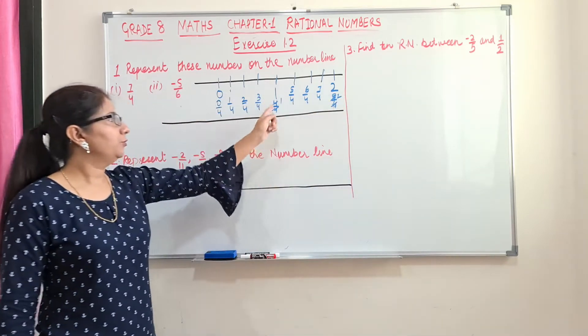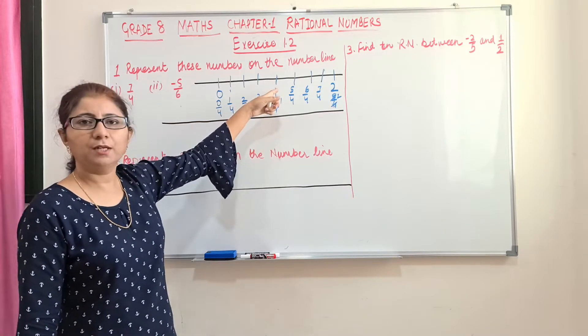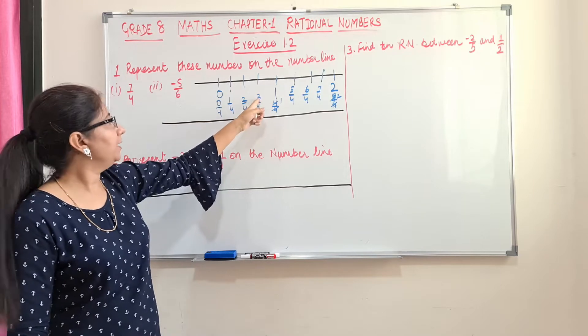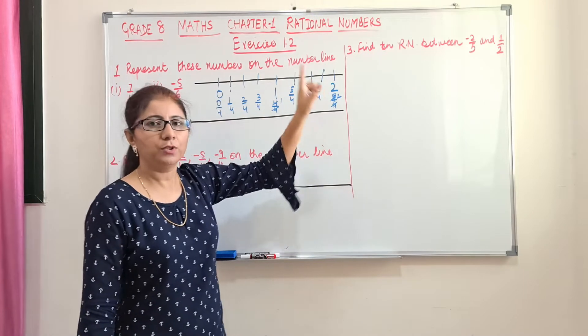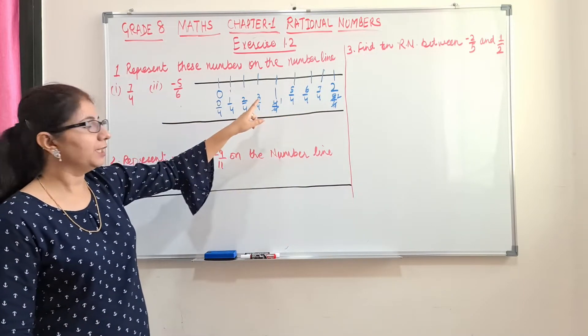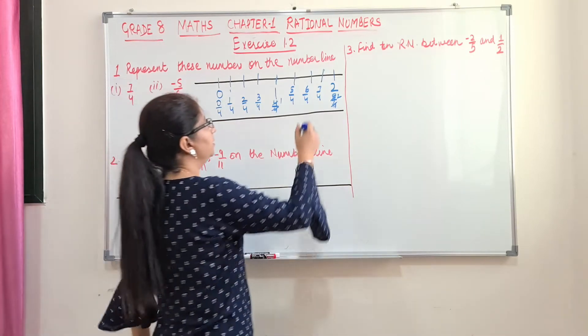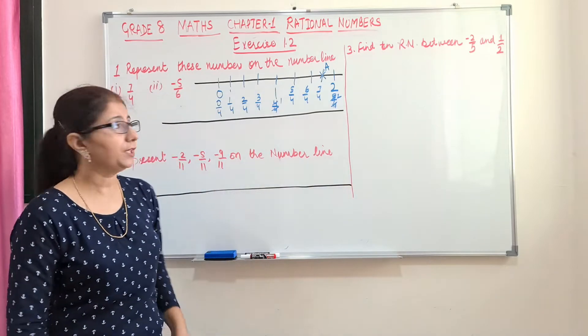Why I am telling you to write 4 by 4 also? Because sometimes students get confused how it comes 1. And if you don't write it, sometimes students will write 3 by 4 here and 4 by 4 here. So we will write in the same sequence so that we should not get confused. So what is our number? 7 by 4. So just find the number 7 by 4, cross it and mark it as A.